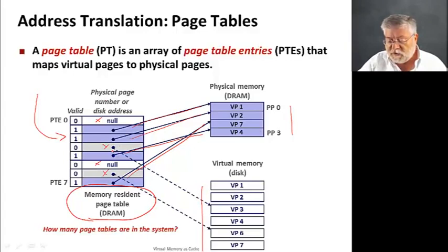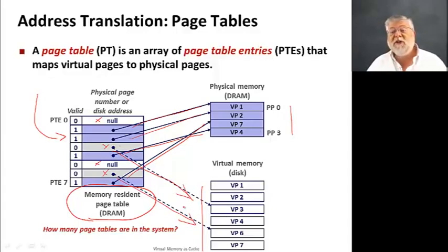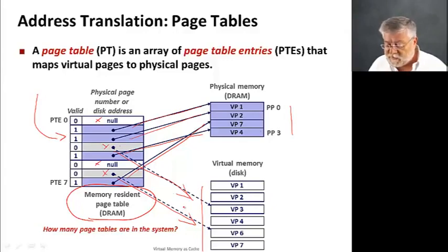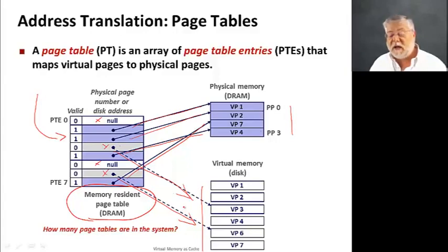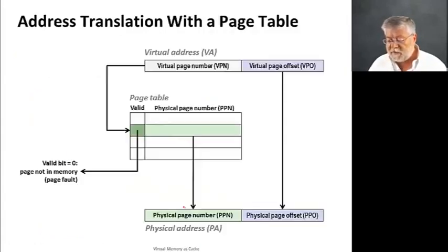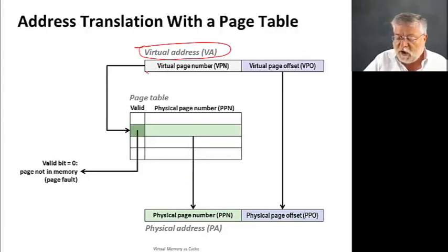Those two gray-colored pages have addresses to disk rather than to physical memory. Those addresses have a very different structure — they're not 64-bit addresses; they index a position on disk. How many page tables are there in our computer system? We need one page table for every virtual memory, and every process requires a virtual memory. So there'll be one page table for every single process. Now let's look at address translation again: we start with a virtual address and use part of it — the virtual page number — to index the page table.